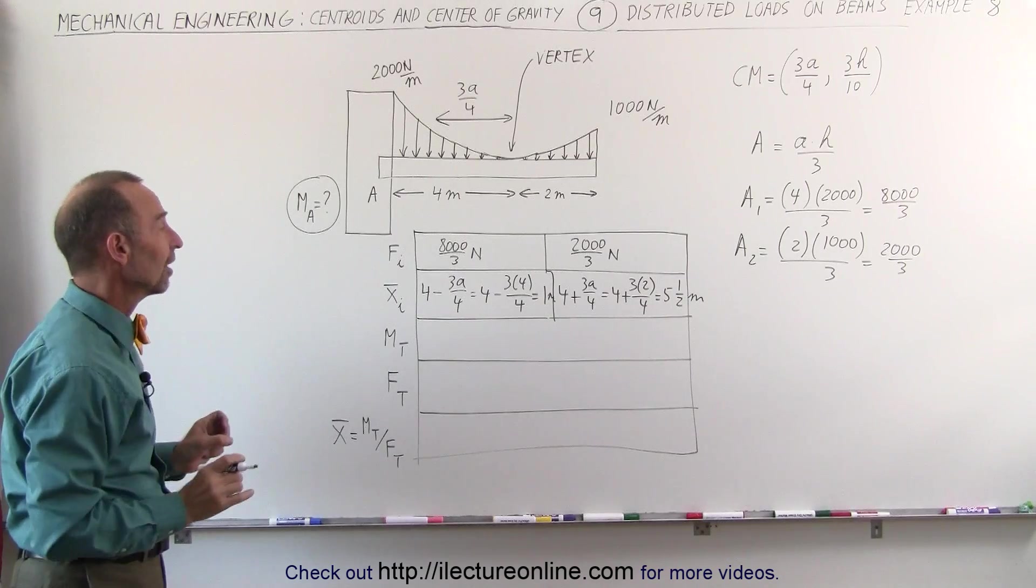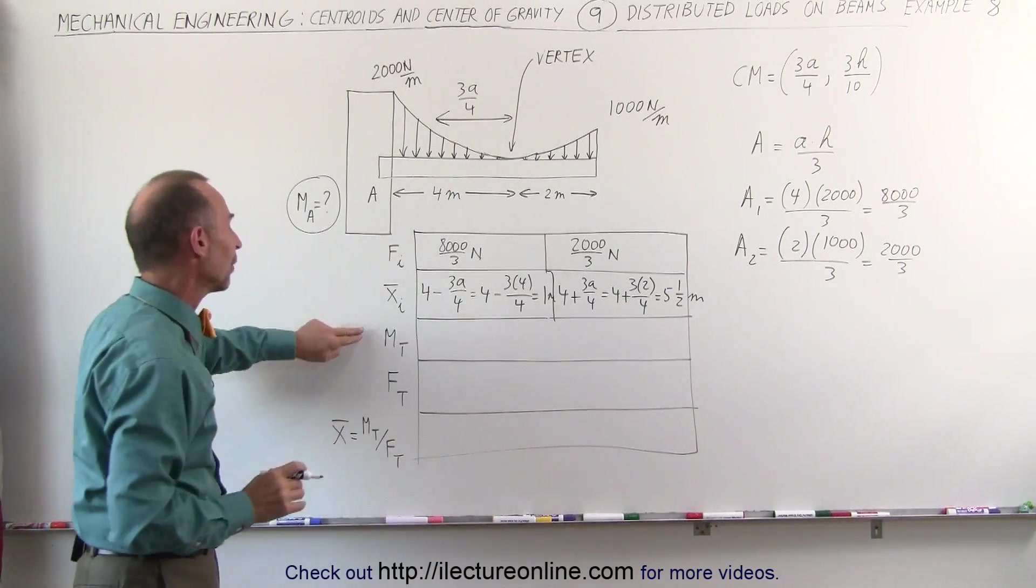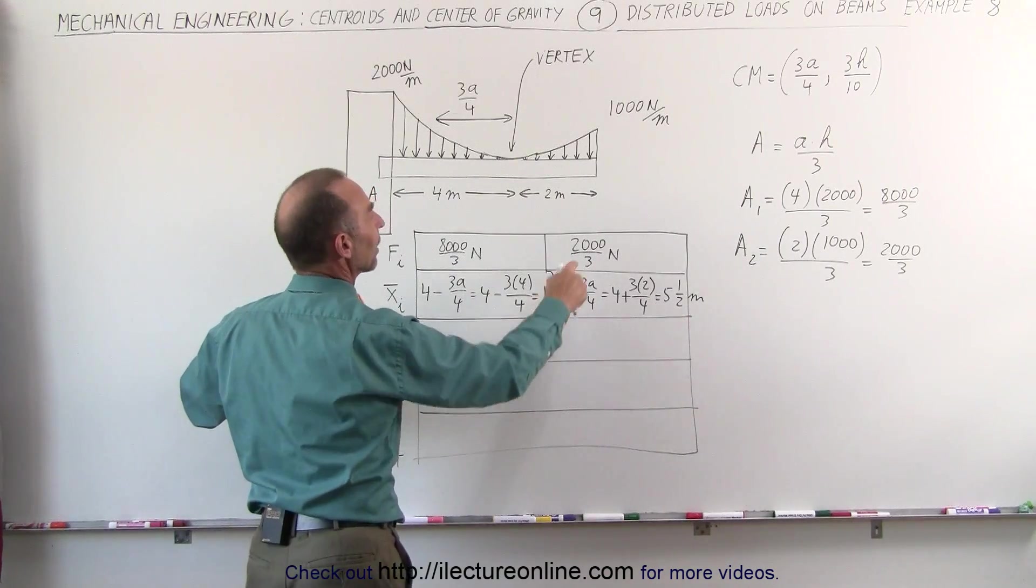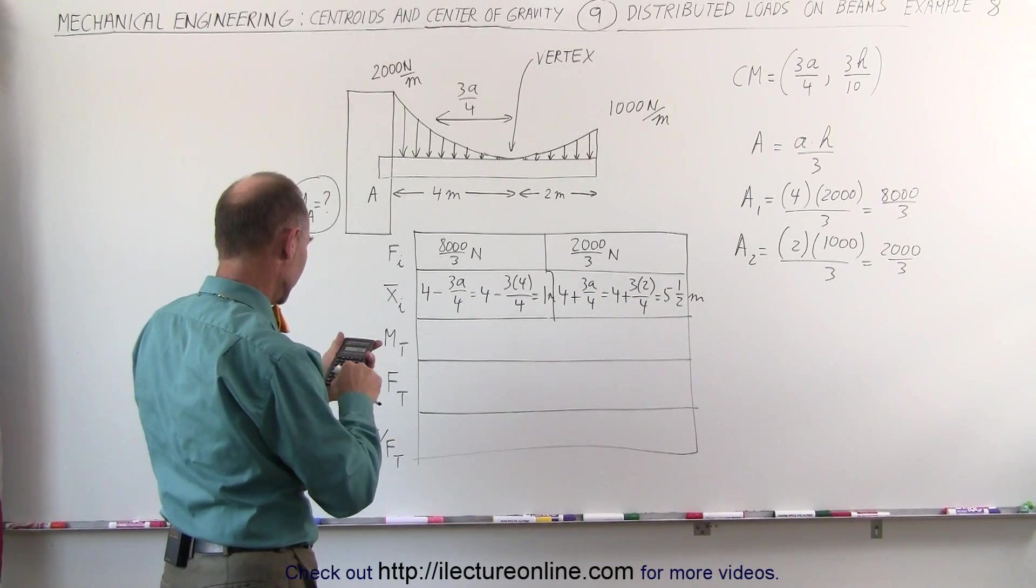Now we have the total forces of each segment, we have the x-coordinate of the centroids of each segment, now we can find the total moment by multiplying this times this and adding to this times this. 8,000 divided by 3 plus, 2,000 divided by 3 times 5.5 equals.